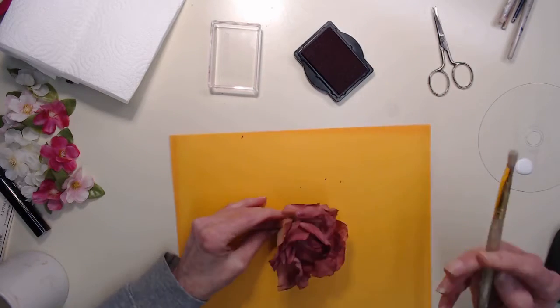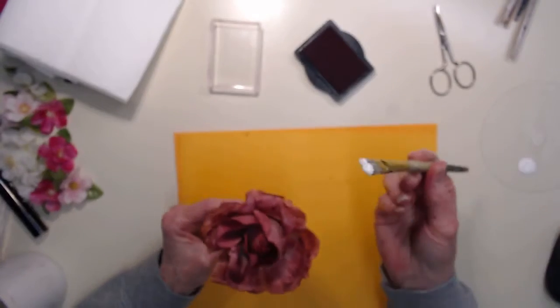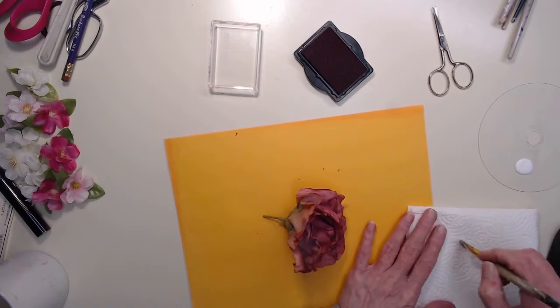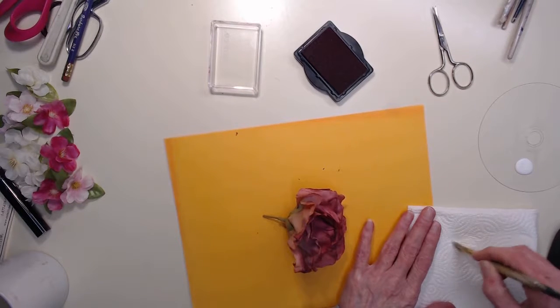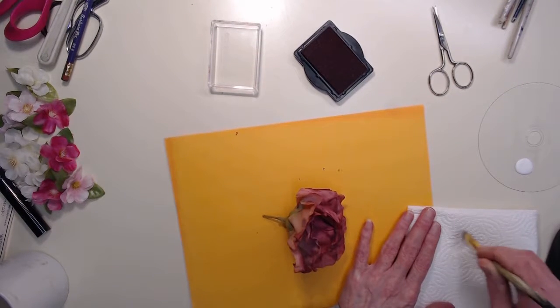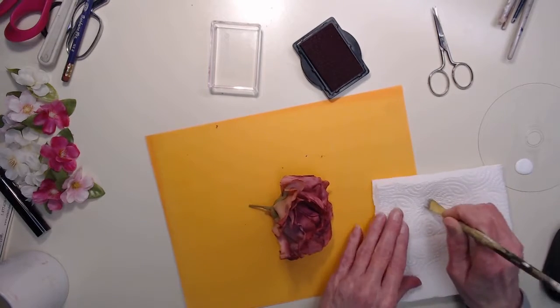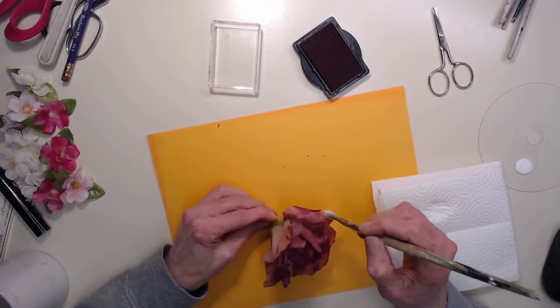Then I took some white paint, just regular white paint, and rubbed it into a paper towel like this. We're going to dry brush this on.